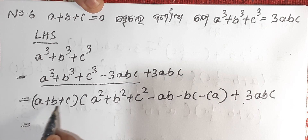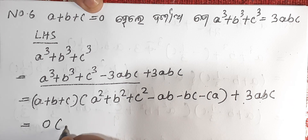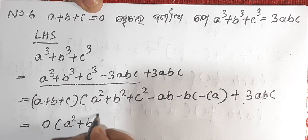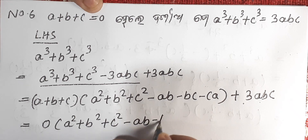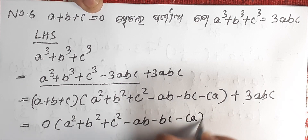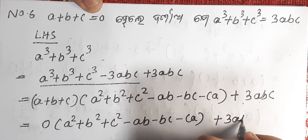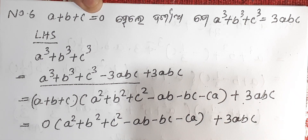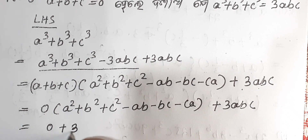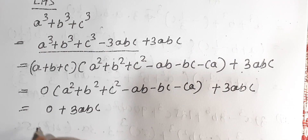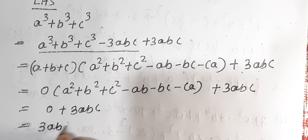That is, A plus B plus C is equal to 0. So substituting, we get 0 into A square plus B square plus C square minus AB minus BC minus CA, plus 3ABC. That is equal to 0 into something, which is 0, plus 3ABC, equal to 3ABC.